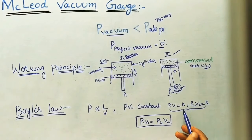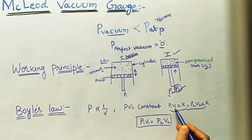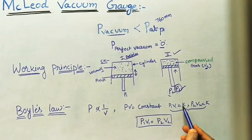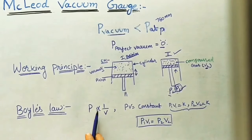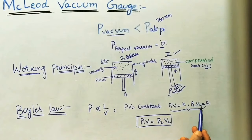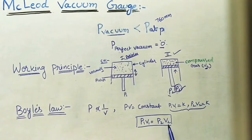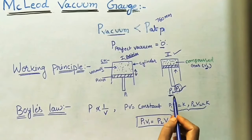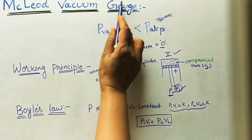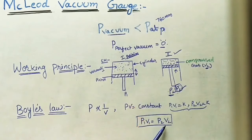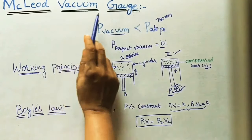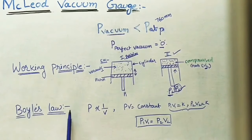Taking two gas states: P1V1 equals a constant and P2V2 equals a constant. Therefore we can compare and write P1V1 equals P2V2. Similarly, we have to find P2, the vacuum pressure, by using this gauge. We know V1, we know P1, we know V2 (compressed gas), so we can find P2. That is why we say the McLeod vacuum gauge obeys Boyle's law.